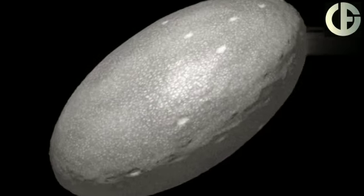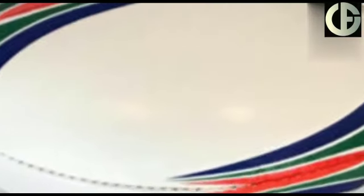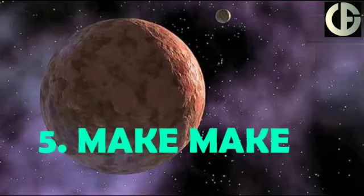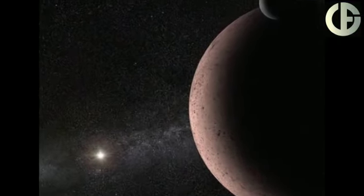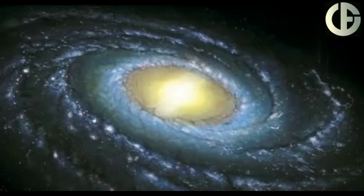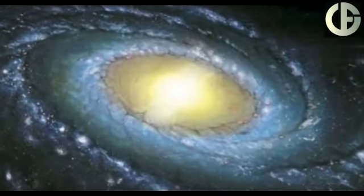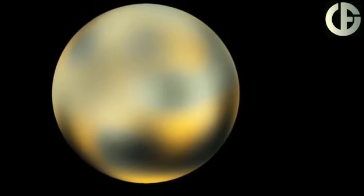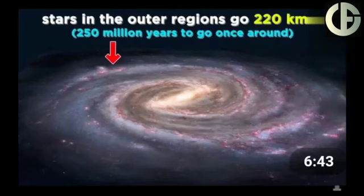Lastly, Makemake. Makemake is the largest dwarf planet which does not have its own orbiting moon. It is positioned against the dense background of Milky Way stars, making it difficult to discover this dwarf planet.